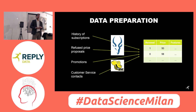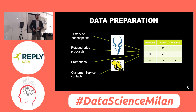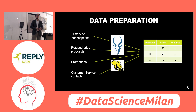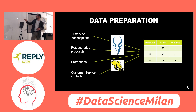First of all, we crunched all the data we had and created a data model with a target that is binary: the customer renewed or not — 0 or 1. The price proposed, and a lot of other features related to the product, the customer, or the interactions of the customer with customer service or other channels. Almost standard, let's say.